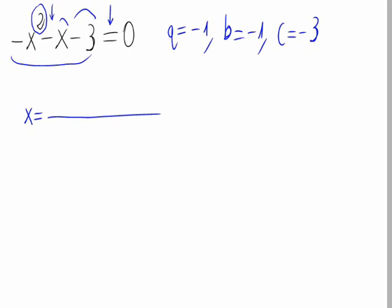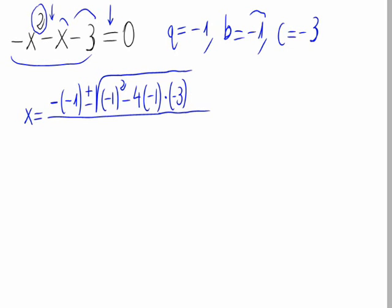So the formula for this second degree equation is -b, which is -1, plus minus the square root of b square, which is (-1)², minus 4 times a times c, times -1 times -3, divided by 2 times a, that's 2 times -1.